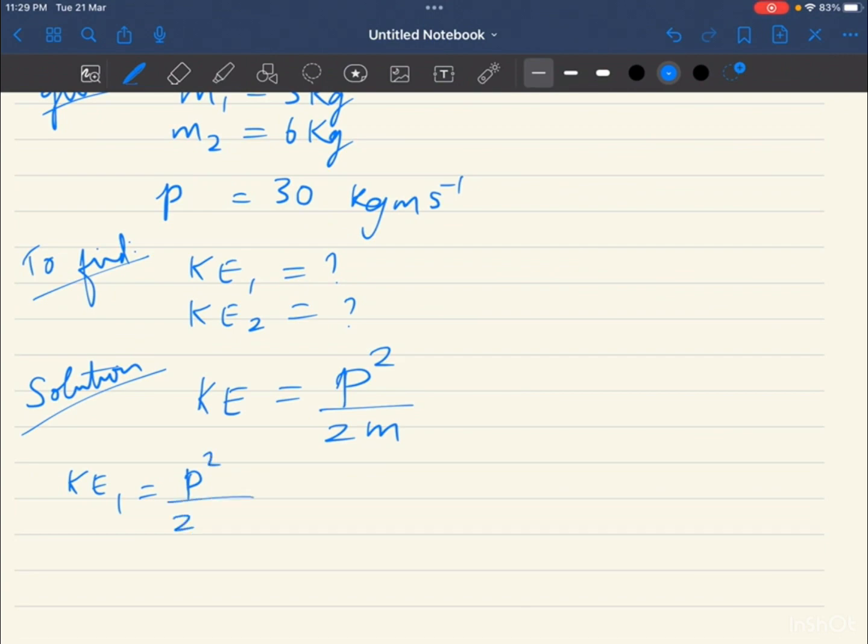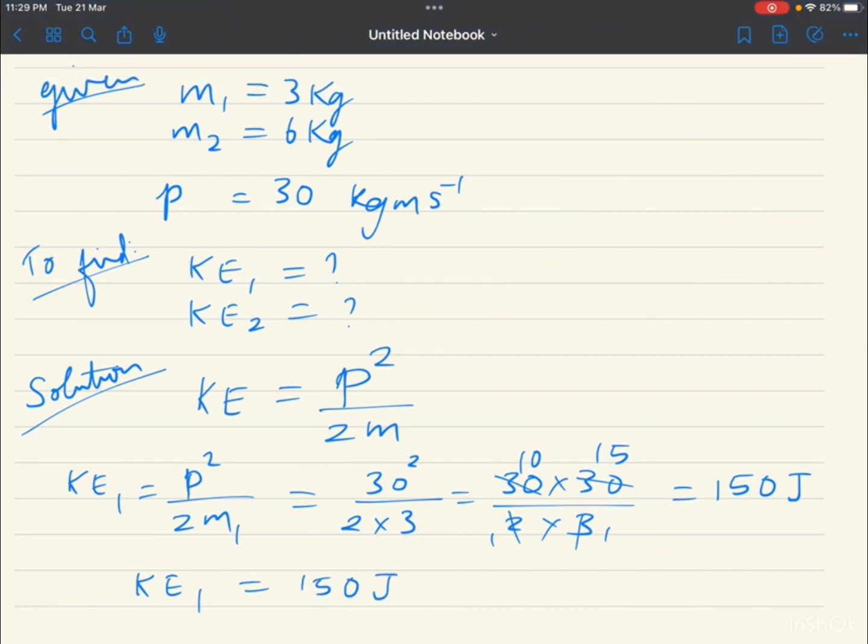Use P square by 2 m1. Now what is P? 30. 30 square by 2 into mass 1, 3 kg. So 30 is square, 30 into 30 divided by 2 into 3. Cancel: 3 table 1 time, 3 table 10 times, 2 table 1 time. It is 15 times, so 150. Kinetic energy 1 equal to 150 joules.